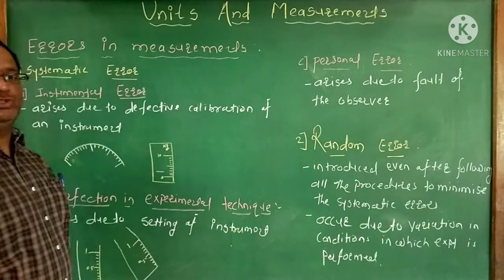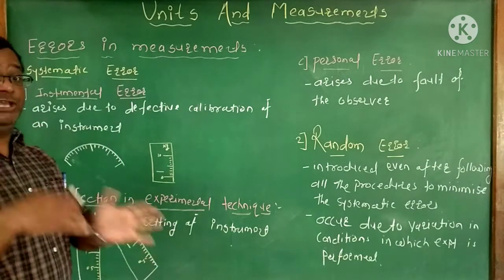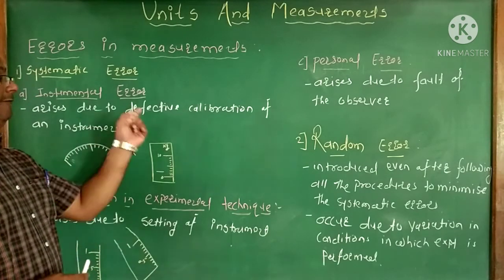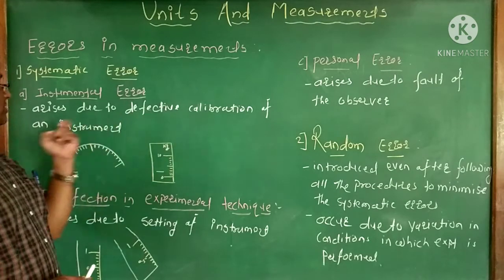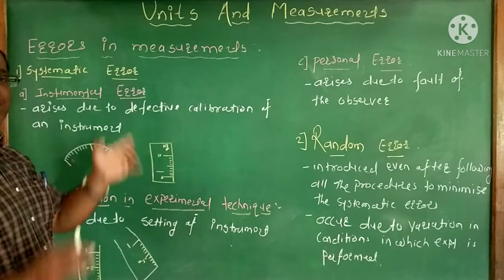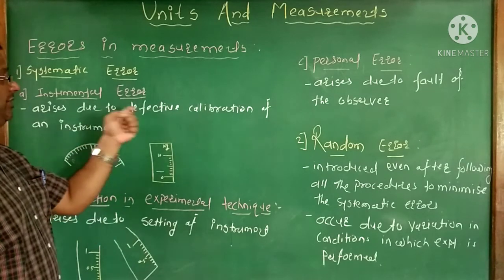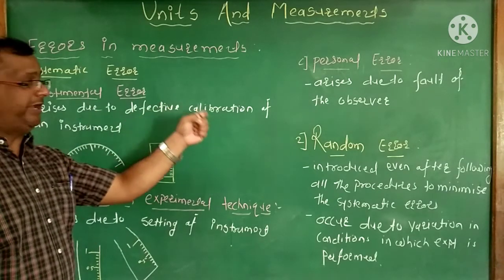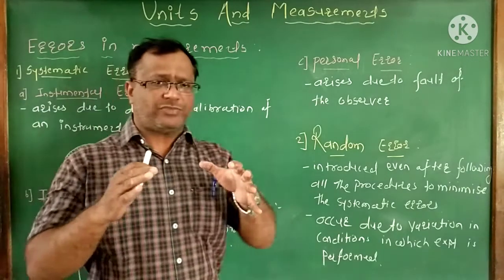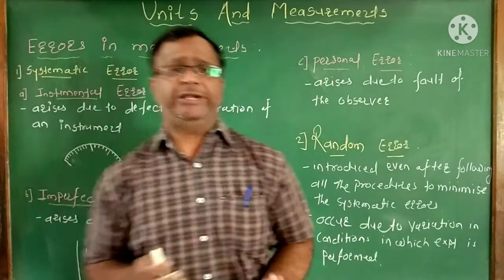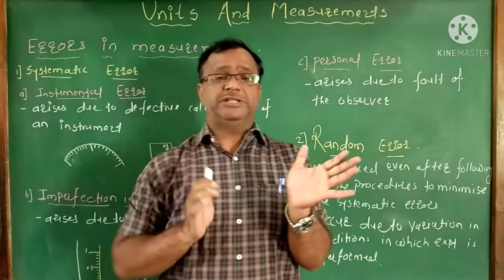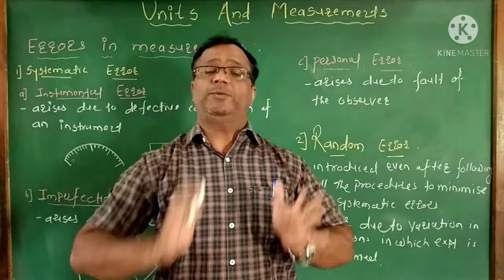First, instrumental error: this error arises due to defective calibration of an instrument. For example, suppose you want to calibrate a scale — if that scale is not properly calibrated, meaning the distance between two lines on the scale is not uniform, that gives rise to instrumental error.